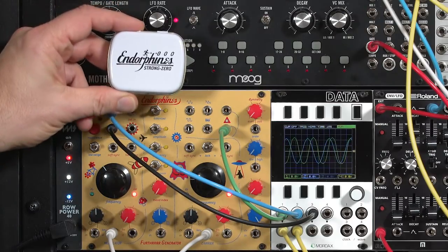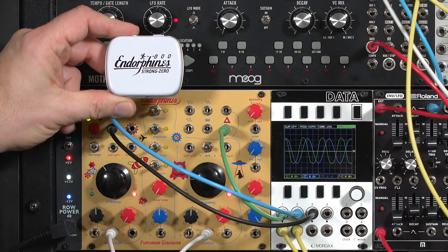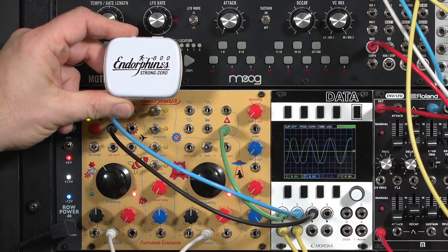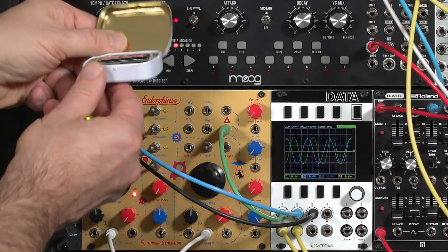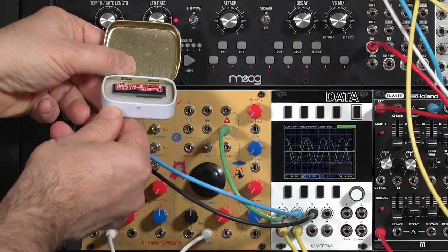However, there is an optional Strang Zero core oscillator that plugs right in in place of either one of the existing VCOs. It's just a simple chip on a series of pins, very easy to install.